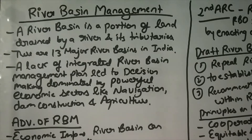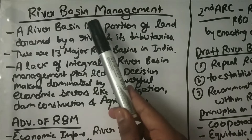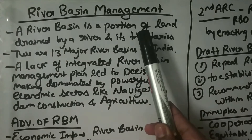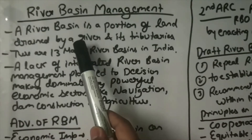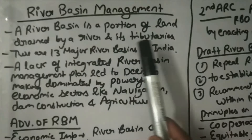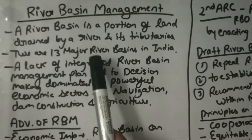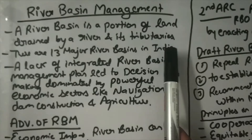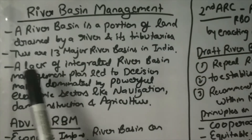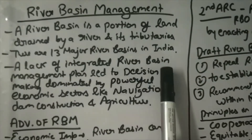We'll talk about river basin management. A river basin is an area of land drained by a river and its tributaries. There are 13 major river basins in India.